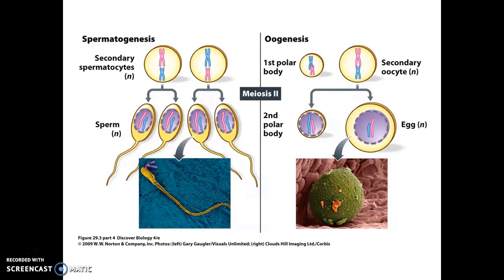Hundreds of millions of sperm are produced on a daily basis in a typical adult human male, whereas in a typical adult human female, once every ovarian cycle, one egg is successfully developed and released. There will be some variance in both the length of the ovarian cycle and the total number of eggs released, but typically it's one fertilizable egg in every approximately 28-day cycle. In the next video, we're going to talk about the female reproductive cycle and how that process produces an egg cell and prepares it for possible fertilization.